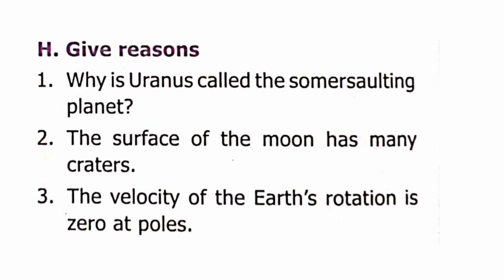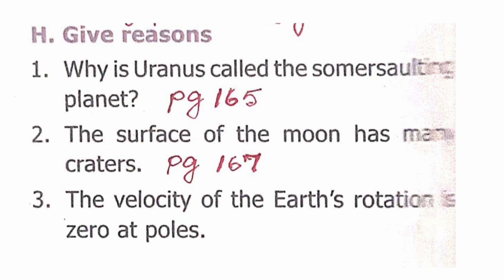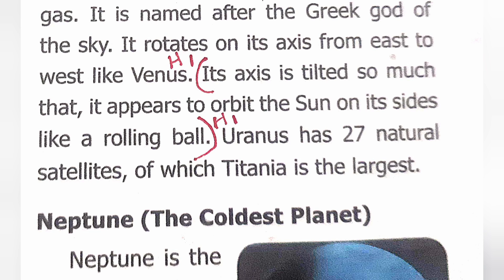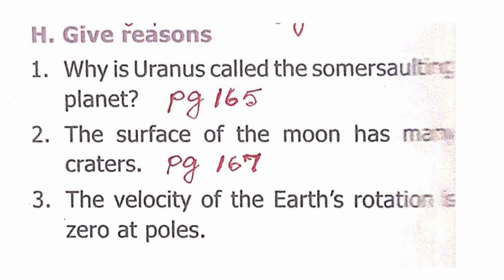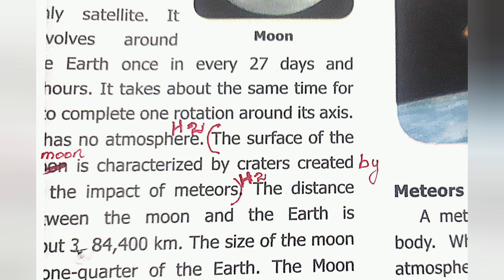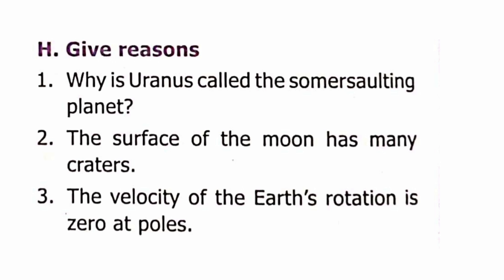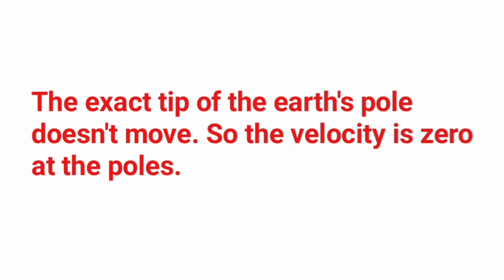Section H: Give Reasons. Question 1: Uranus is called the somersaulting planet because its axis is tilted so much that it appears to orbit the Sun on its sides like a rolling ball. Question 2: The surface of the moon has many craters created by the impact of meteors. Question 3: The velocity of the Earth's rotation is zero at the poles because the exact tip of the Earth's pole doesn't move.